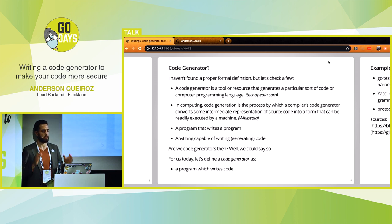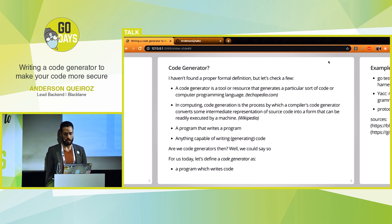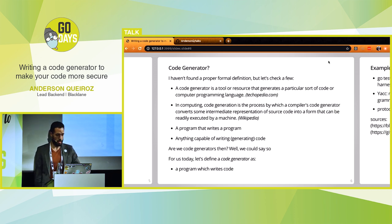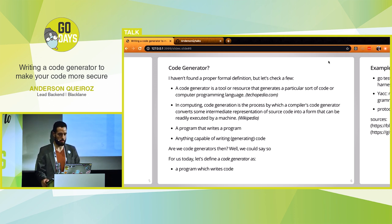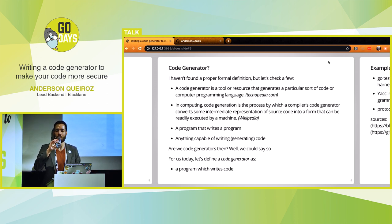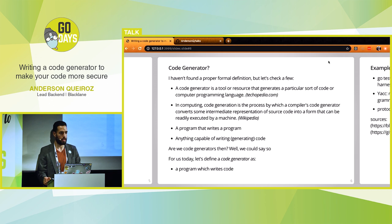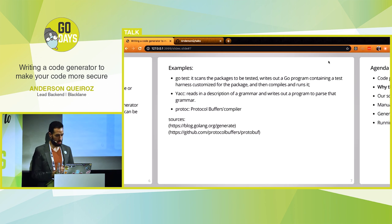First, what's a code generator? I was looking for a formal definition. From Technopedia: code generation is a tool or resource that generates a particular sort of code or computer programming language. Wikipedia says: code generation is the process by which a compiler's code generator converts some intermediate representation of source code into a form that can be readily executed by machine. Informally: a program that writes a program — anything capable of writing code. For today, just focus on code generation as a program that can write Go code.